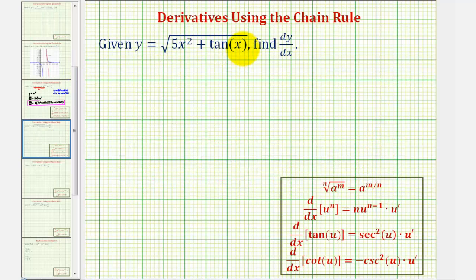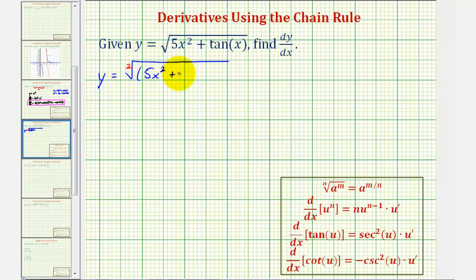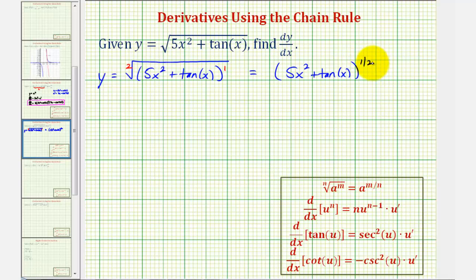Looking at our second example, we want to rewrite this square root using a rational exponent. We're given y equals the square root — with index two — of the quantity five x squared plus tangent x. We can think of this as being raised to the first power over two, so we can write this as the quantity five x squared plus tangent x to the one-half power. The fractional exponent will always be the exponent over the index. Again, we have to apply the chain rule, where the inner function is five x squared plus tangent x, which will be u.